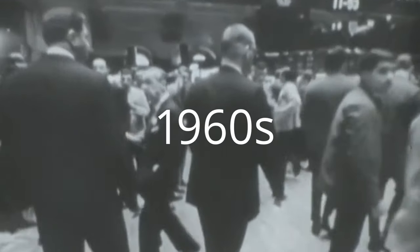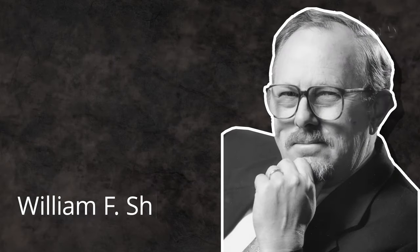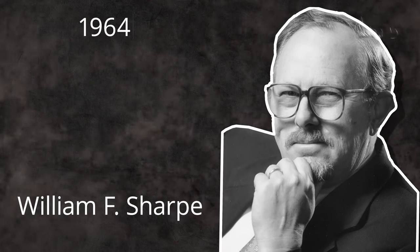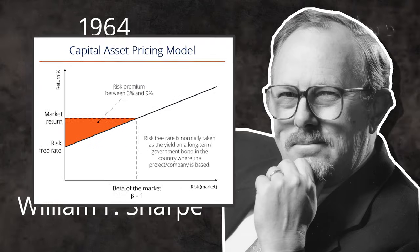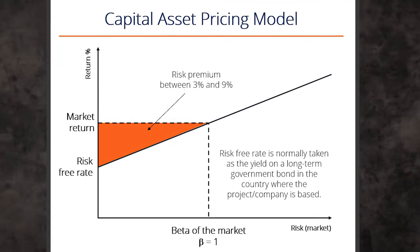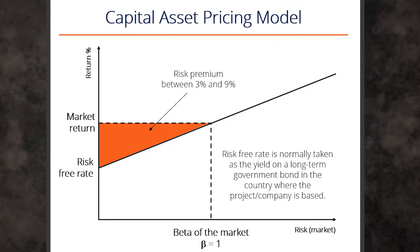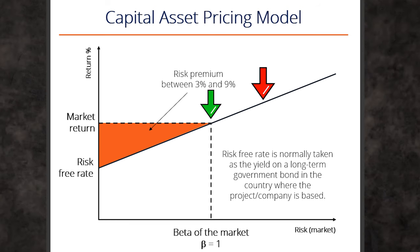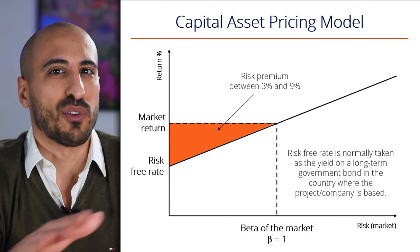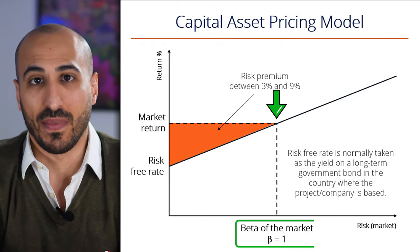Let's go back in time to the 1960s. I want you to meet William F. Sharpe, an economist and professor of finance who in 1964 developed the Capital Asset Pricing Model, or CAPM. This model established that if an investor wanted to achieve a higher return than the markets, they needed to take on more risk than the markets. The inherent risk of the market was defined as beta and assigned the value of one.